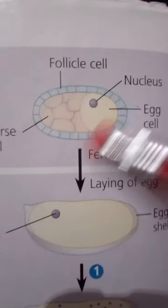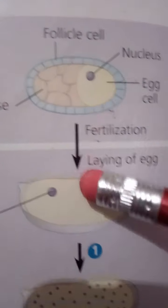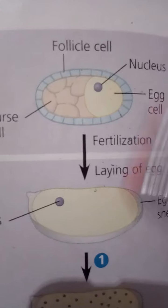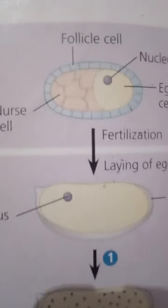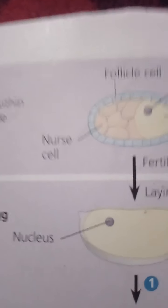The Drosophila egg cell develops in the female's ovaries, surrounded by ovarian cells called nurse cells and follicle cells. These supply the egg cell with nutrients, mRNAs, and other substances needed for development, and make the egg shell after fertilization and laying of the egg.